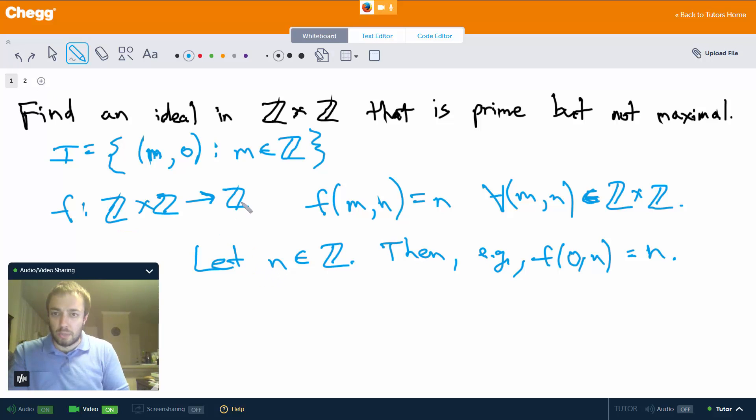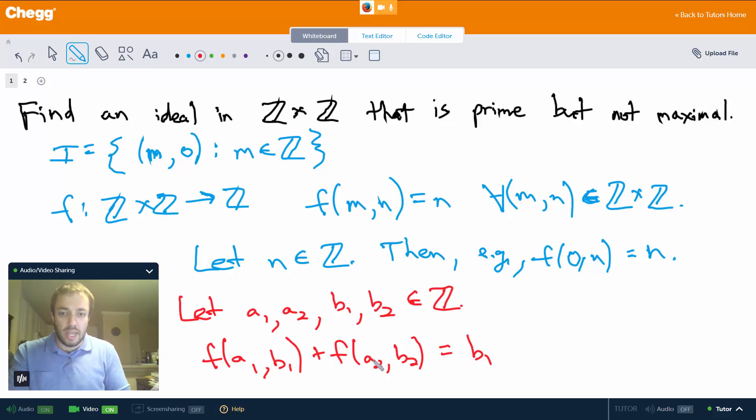And to show it's a homomorphism we're going to let a₁, a₂, b₁ and b₂ be integers. Then consider f(a₁,b₁) + f(a₂,b₂). Well by definition of f, f(a₁,b₁) is just b₁ and f(a₂,b₂) is just b₂, so this is b₁ + b₂. But notice also that this is equal to f(a₁+a₂, b₁+b₂).